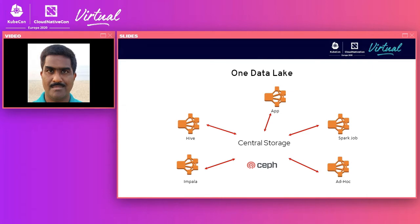We also needed a centralized data lake for storing all the long-term data assets of a company. For that, we chose to build on Ceph running on Linux, where the majority of data was stored in object storage. Object storage is an emerging standard becoming pervasive for storing large, unstructured data sets, and Ceph has a rich set of object storage capabilities. To recap: we used Rook to instantiate Ceph clusters inside Kubernetes for localized storage, and Ceph object storage as the centralized data lake running across the organization.